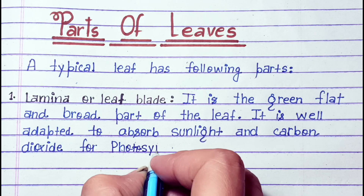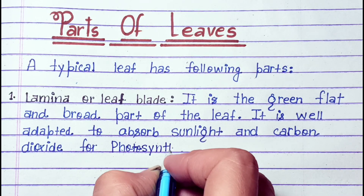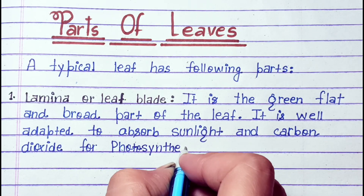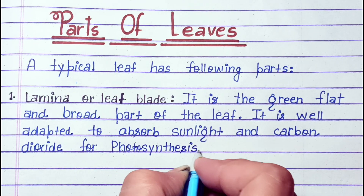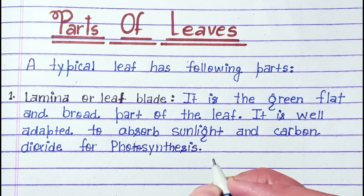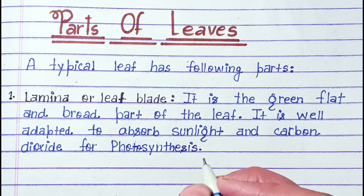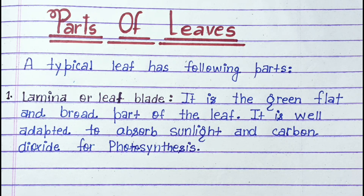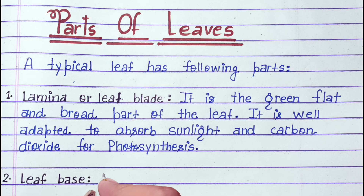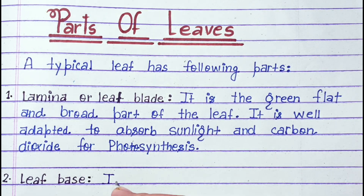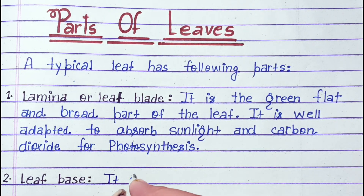It is the green, flat, and broad part of the leaf. It is well adapted to absorb sunlight and carbon dioxide for photosynthesis. The second part is leaf base.